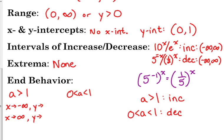So when a is greater than 1, meaning we have an increasing exponential function, as we go to negative infinity, the left side of our function, what are our y values headed to? Zero. As x is approaching positive infinity, so the right side of the function, where are the y values going? Positive infinity.